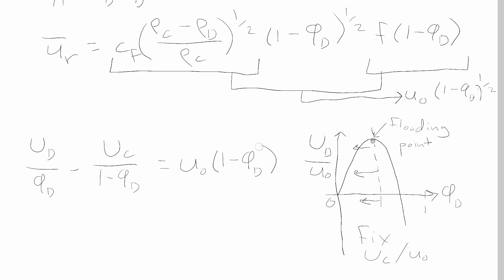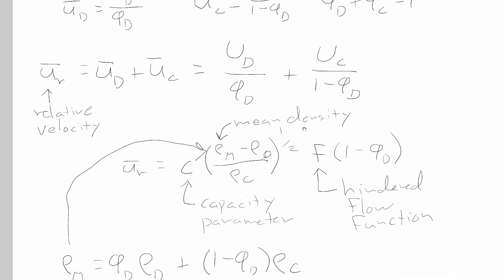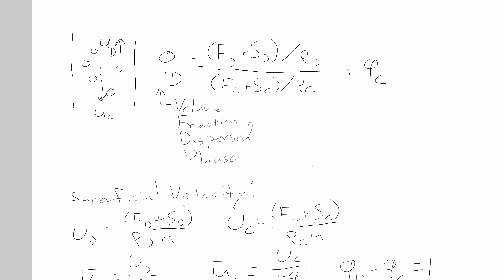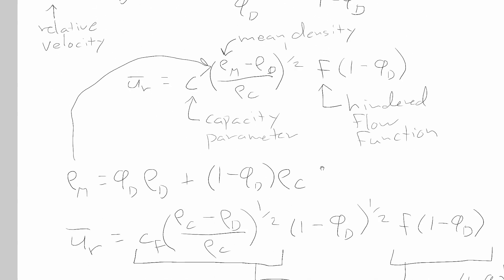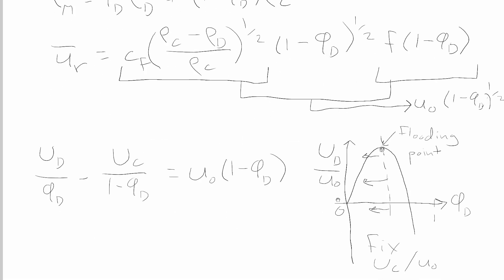This plot describes the flooding point of the column as a function of the dispersed phase volume fraction, which is in turn related back to the relative flow rates of the dispersed and continuous phases. The flooding point argument gives a limit on the design of the column in terms of the ratio of continuous to dispersed phase flow rates.